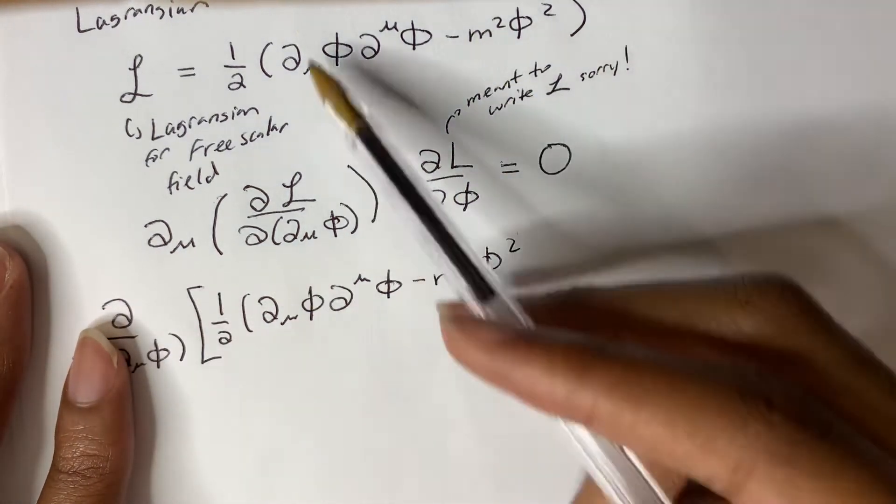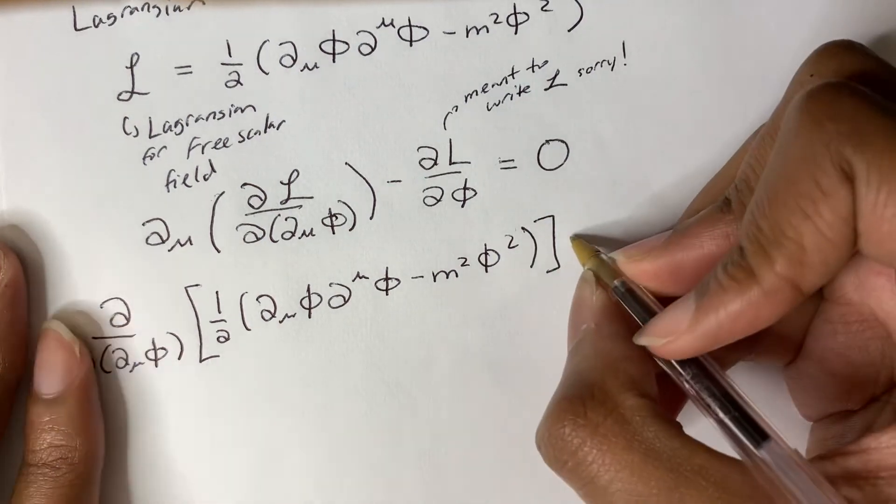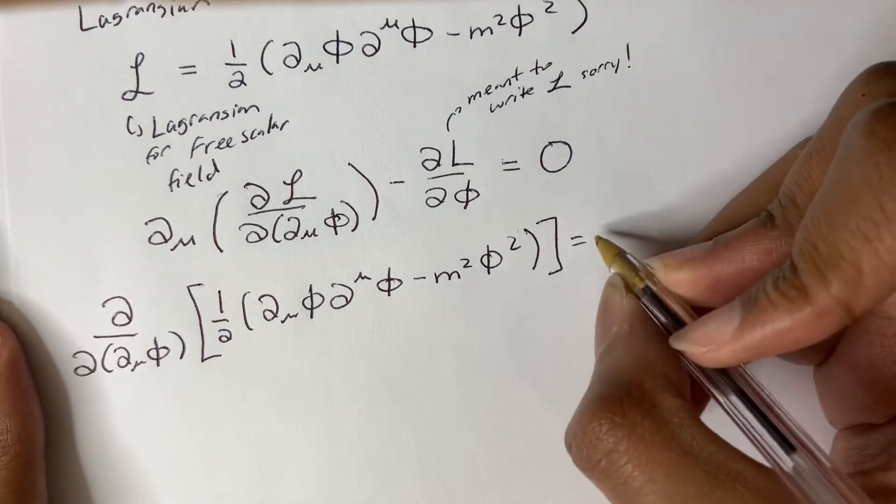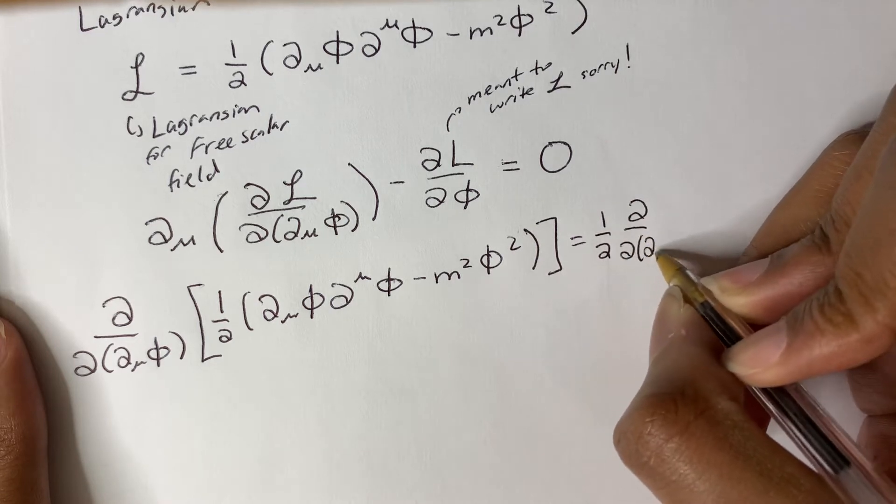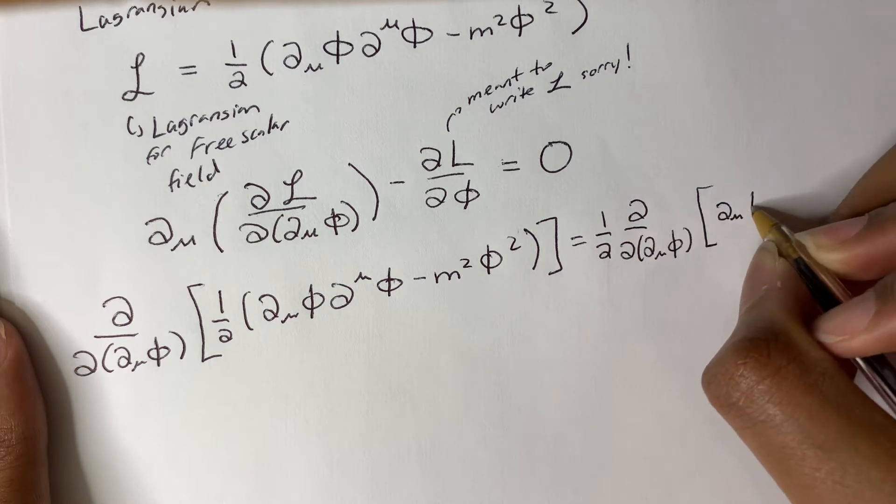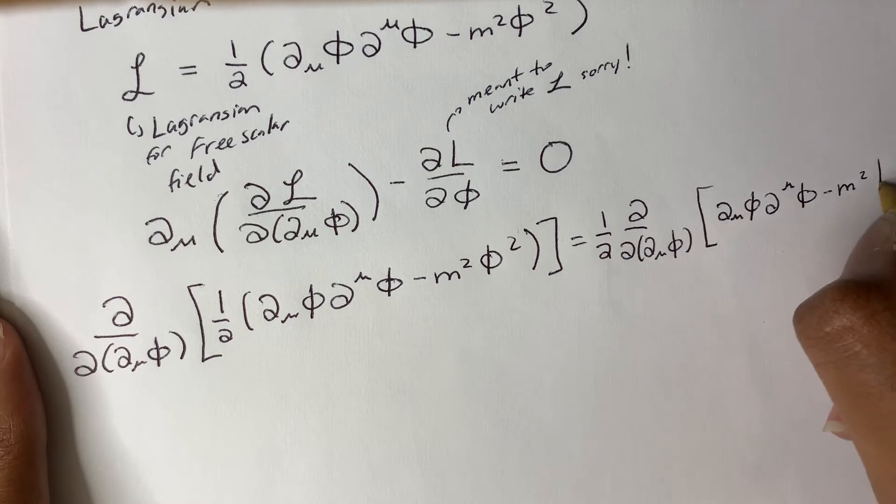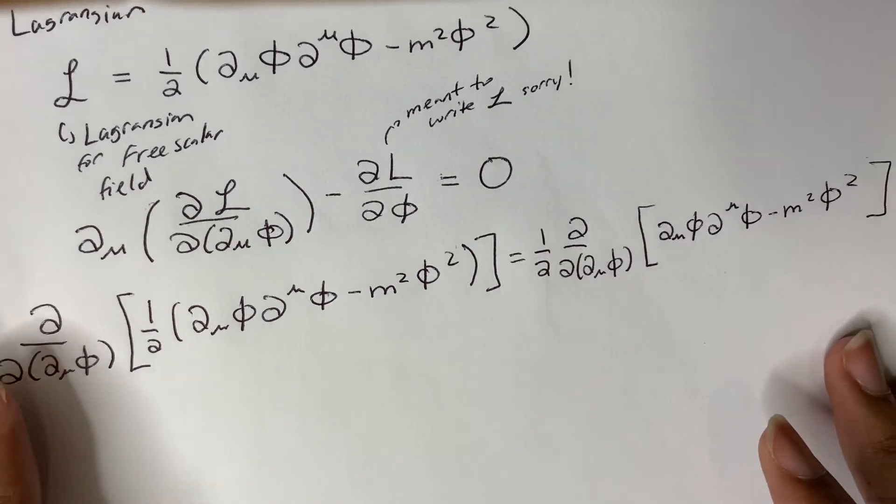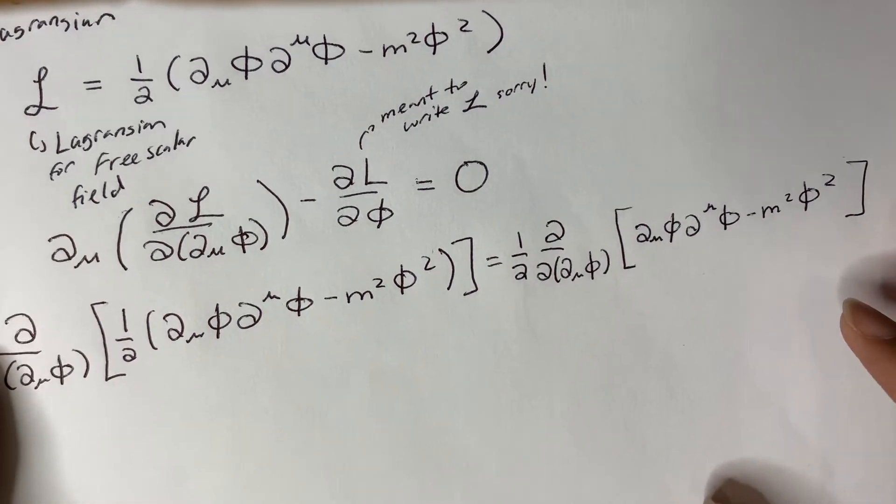So we should plug in the Lagrangian here. Now what we can do is move the one-half to the front of the derivative since one-half is a constant. So we have one-half times partial over partial mu phi of partial mu phi partial mu phi minus m squared phi squared. Also, for this video, we'll be using the mostly minus sign convention for the metric.